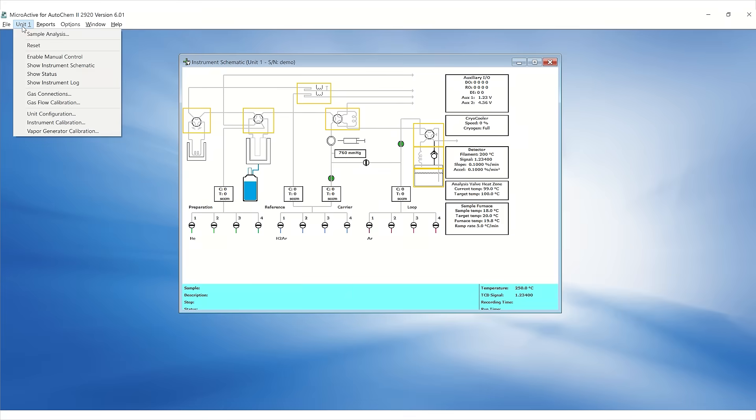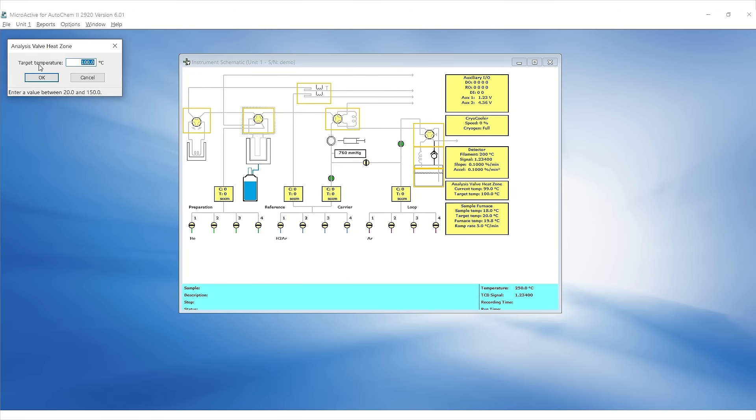In the Microactive software, go to Unit, Enable Manual Control, and right-click on the sample valve heat zone to set the temperature to 20 degrees Celsius.